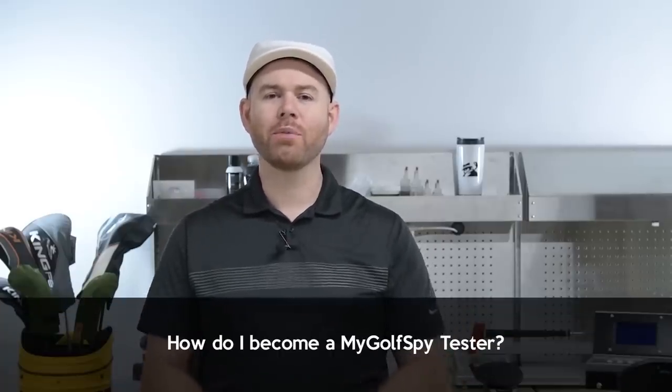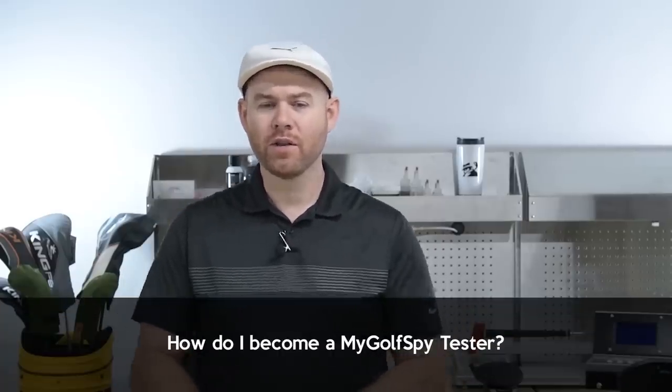One question we get a lot is, how do I become a MyGolfSpy tester? The short answer is you need to live close to Yorktown, Virginia. Our facility is located in Yorktown. We have an indoor putting green as well as two indoor hitting bays with Foresight GC Quad launch monitors. We basically have everything we need in order to conduct our club test. Another way you can test for us is if you happen to live near Saratoga Springs, New York. That's where I am. We have a secondary facility at McGregor Links Country Club, also equipped with a GC Quad launch monitor. We do some experimental stuff up here. We also get to do some kind of cool one-off tests. For example, we did our low spin shaft test here and we also did our women's driver test, which was just a ton of fun.